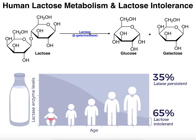Lactase converts lactose into glucose and galactose. Lactase levels are by far highest in infants, and as we age those levels drop substantially, to the point that some adults are considered lactose intolerant. Some individuals can genetically retain lactase expression, but about 65% of adults according to this source no longer have the lactase enzyme and therefore cannot convert lactose into glucose and galactose — so lactose levels build up if they consume a product containing lactose.